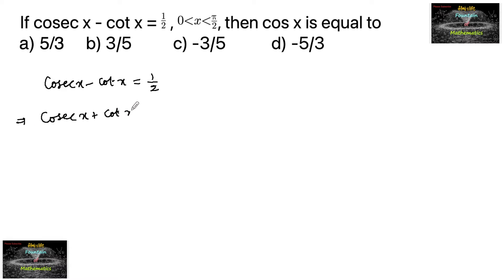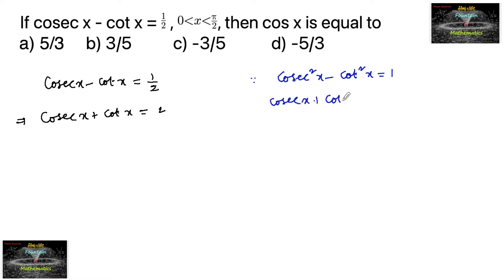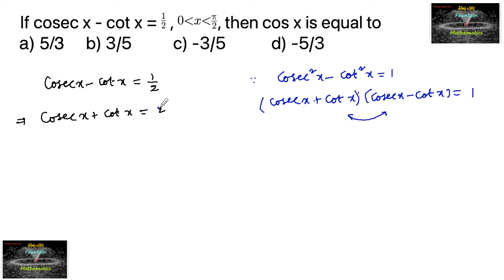Since cosecant squared x minus cot squared x equals 1, we can factor this as (cosecant x + cot x)(cosecant x - cot x) = 1. This means cosecant x plus cot x is equal to 1 divided by (cosecant x minus cot x), so they are reciprocals of each other.